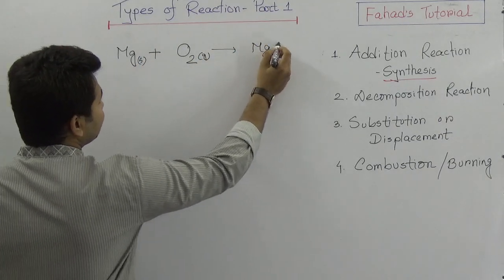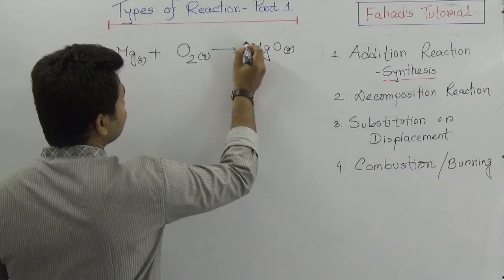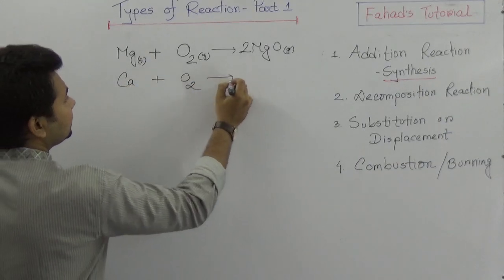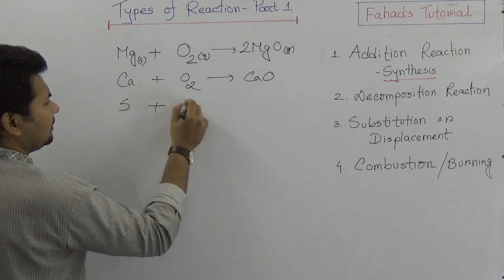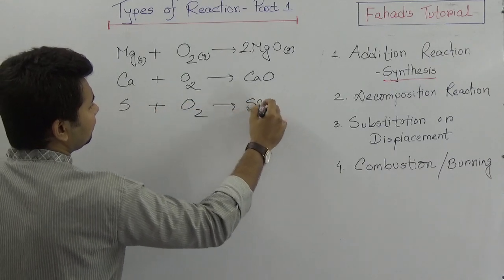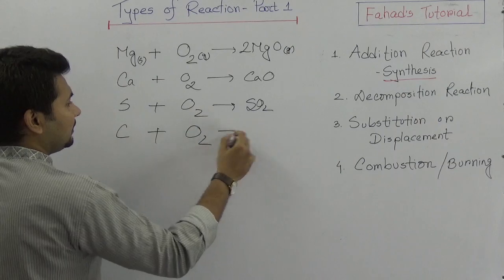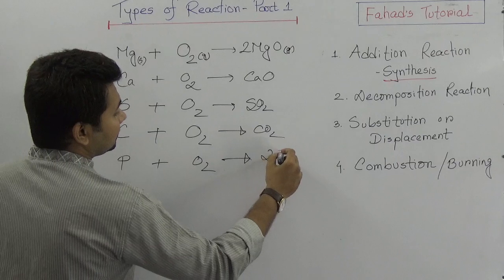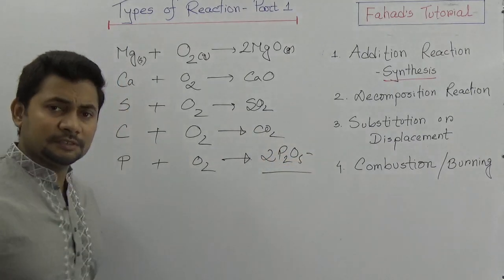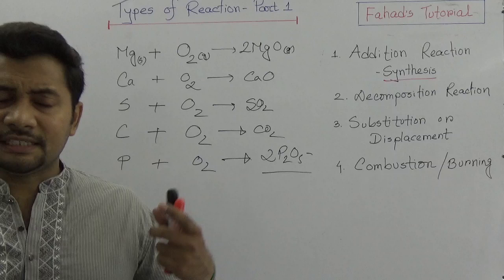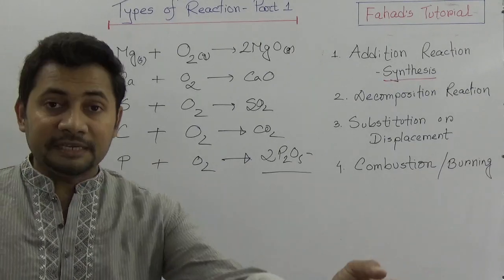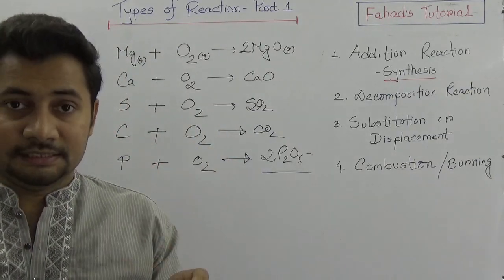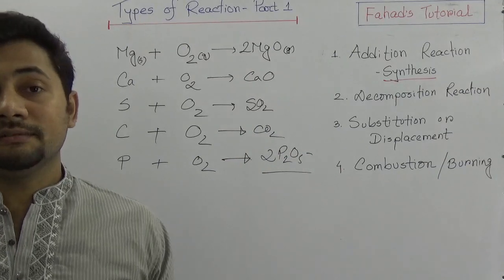Magnesium oxide is produced. If you consider calcium and oxygen, it produces calcium oxide (CaO). Think about sulfur — it produces sulfur dioxide (SO₂). Think about carbon — carbon dioxide (CO₂). Phosphorus reacting with oxygen produces phosphorus oxide. So metals and non-metals burned in the presence of atmospheric oxygen produce oxides — this is called combustion.